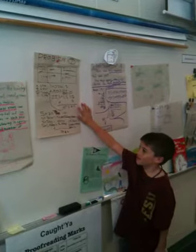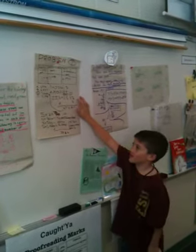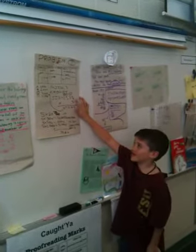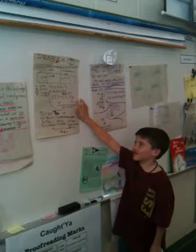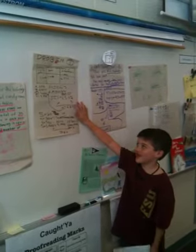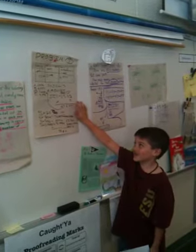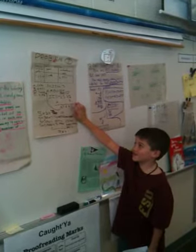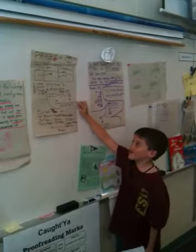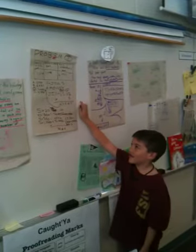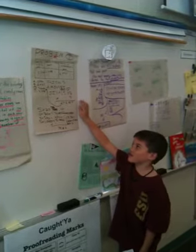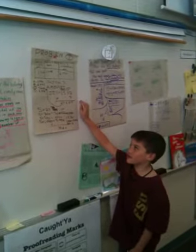Five times three ones is fifteen, so you put the zero and carry the one. Five times three tens is fifteen tens, plus a ten is sixteen tens, so you put the six and carry the one. Five times five hundreds is twenty-five hundreds.